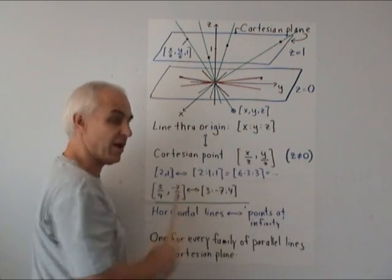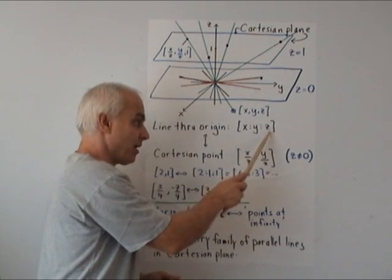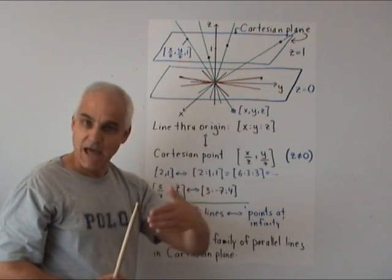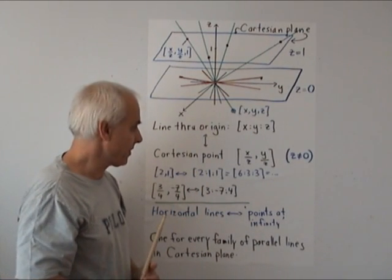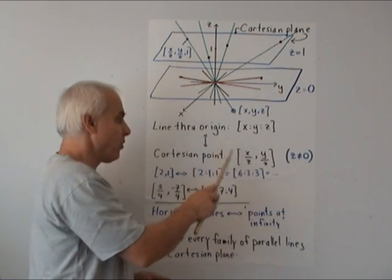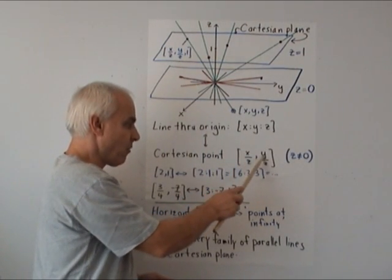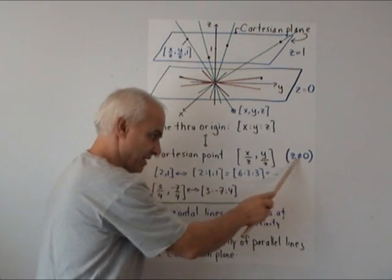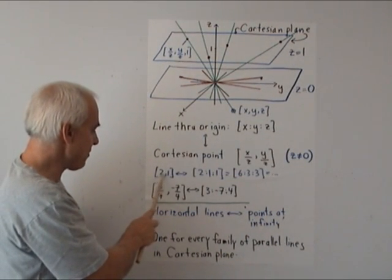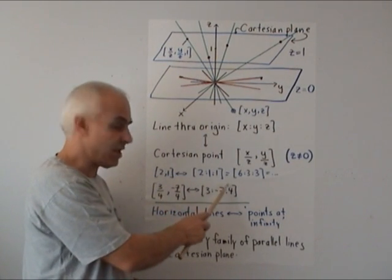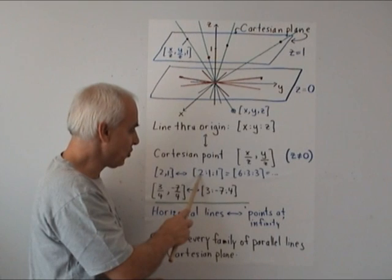It's a very powerful idea that allows us to also work algebraically, because a line through the origin—say the one through the point (x,y,z)—can be represented by proportion [x:y:z]. Proportion means that we're allowed to scale without changing the line, and to that line we associate by this process the Cartesian point (x/z, y/z) provided z is not equal to zero.